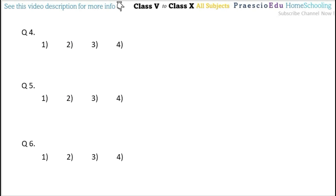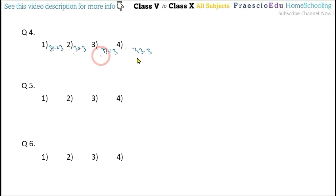Question number 4: which of the following numbers is the biggest? Option 1 is 30.03, option 2 is 30.3, option 3 is 33.03, and option 4 is 33.3. Considering the tens place first: all have tens digit 3. Now the units place: options 1 and 2 have 0, while options 3 and 4 have 3. So we consider options 3 and 4. After the decimal point, option 3 has 0 in the tenths place and option 4 has 3, so option 4 is bigger. Option number 4 is correct.